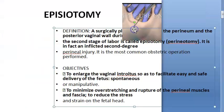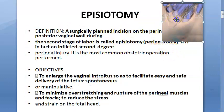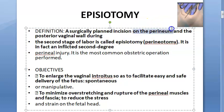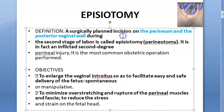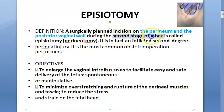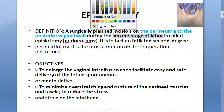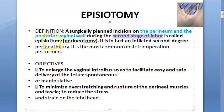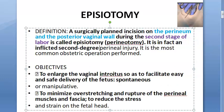What is episiotomy? It is a surgically planned incision on the perineum and the posterior vaginal wall during the second stage of labor. This is called episiotomy or perineotomy. It is, in fact, an inflicted second-degree perineal injury. What type of injury is it? It is a second-degree perineal injury.